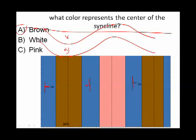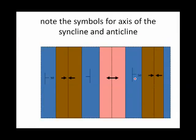This layer X and layer Y, X would be brown and it would be younger. Here also we have the symbols for the axis of the syncline. Here's the axis where it changes from one direction to the other.